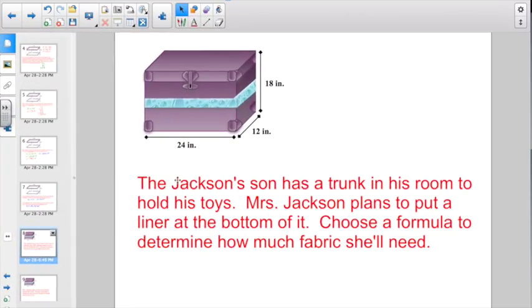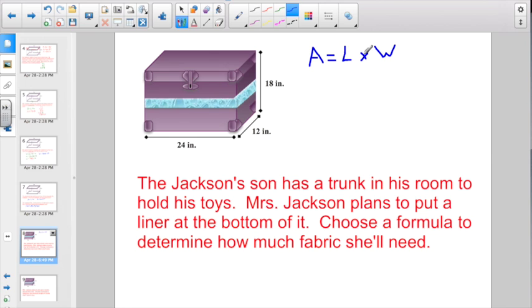Let's go ahead and try another one. The Jackson's son has a trunk in his room to hold his toys. Mrs. Jackson plans to put a liner at the bottom of it. Choose a formula to determine how much fabric she's going to need. She wants to put just some fabric in the bottom of the trunk. Is that going to be an area problem, a perimeter problem, or a volume problem? Hopefully, you already know that, my friends, is an area problem. We want to go with the length times the width. So we're going to start off with the area equals 24 times 12. If you want 24 times 12, you will get a grand total of 288 square inches. I multiplied two numbers together. I need an exponent of 2 in my labeling.